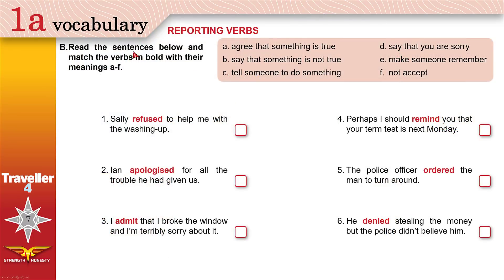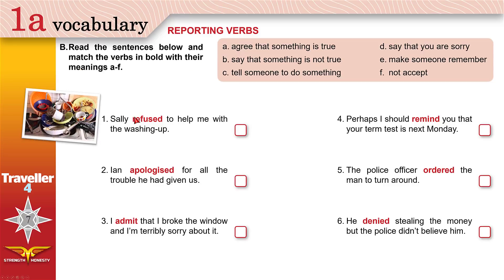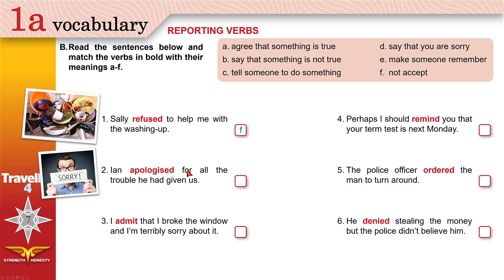Now read the sentences below and match the verbs in bold with their meanings A to F. 'Sally refused again to help me with the washing up.' Washing up means washing the dishes. When you refuse, you don't accept — you say no. Answer F: not accept. 'Ian apologized for all the trouble he had given us.' When you apologize, you say that you're sorry. Answer D: he said that he was sorry.